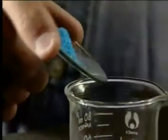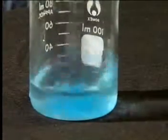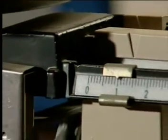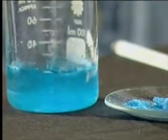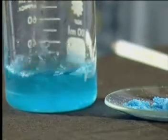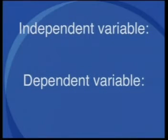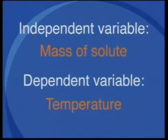But what happens if we change another variable — for example, the mass of the solute? In this experiment we will continue to add the same solute, namely copper sulfate, to 25 milliliters of solvent. The samples of solute have the same mass of 1 gram each. Each time we add 1 gram of solute to the solvent, we stir the solution until all the solute has dissolved. The mass of the solute is the independent variable and the temperature is the dependent variable.